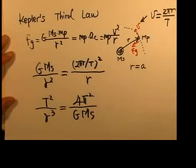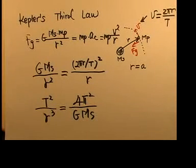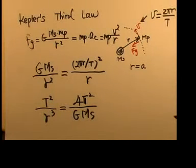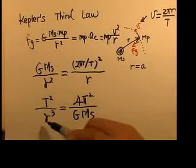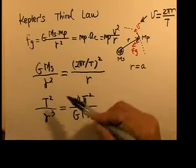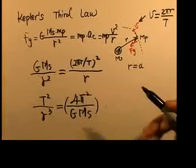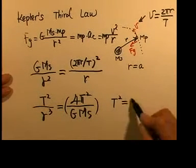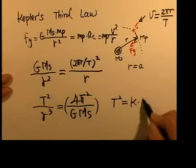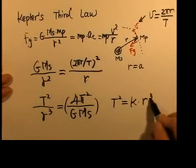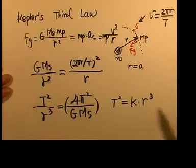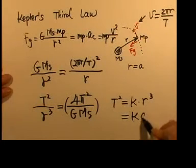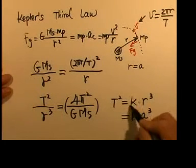This is Kepler's third law: the square of the orbital period is proportional to the cube of the orbital radius. Moving terms gives T² equals a constant k times the orbital radius cubed. For an elliptical orbit, we replace r with the semi-major axis a to the cube. This k is a constant.